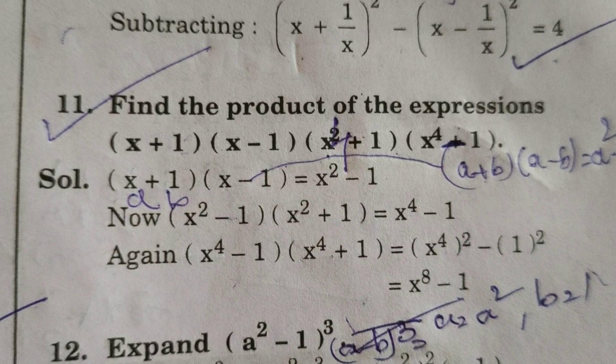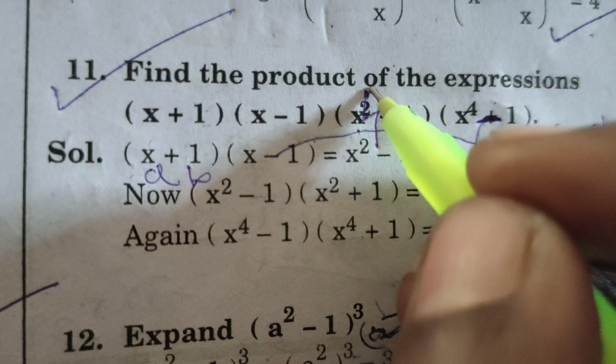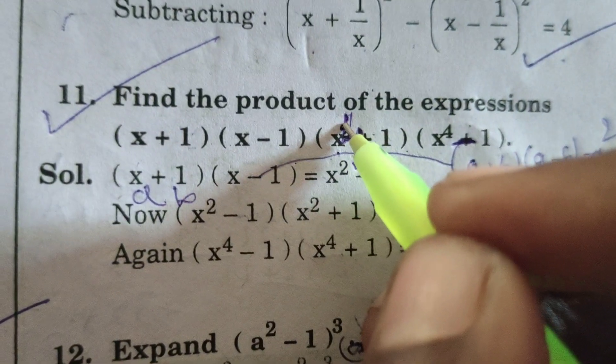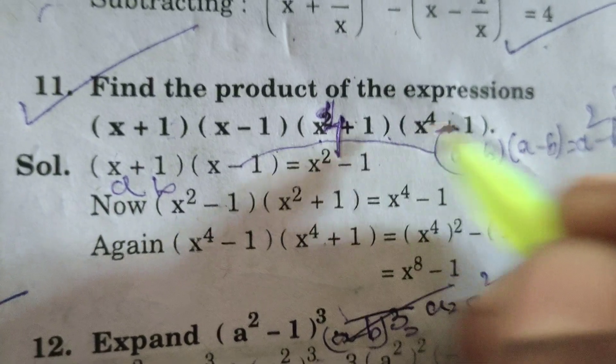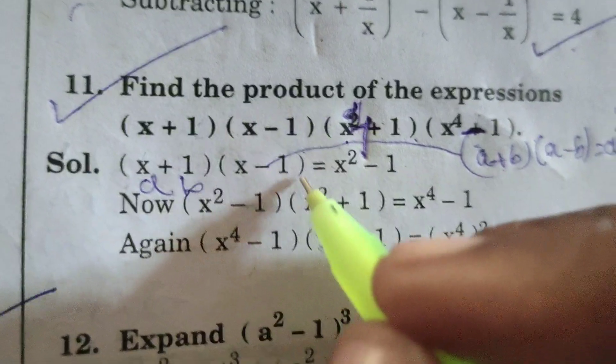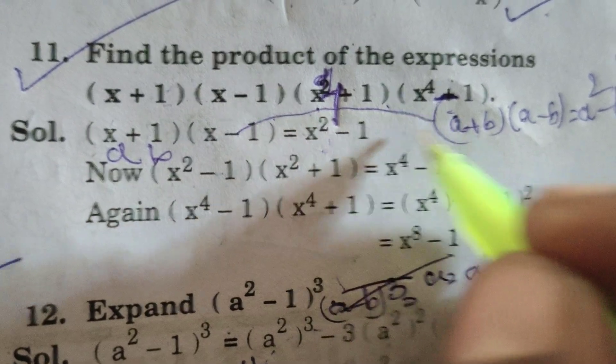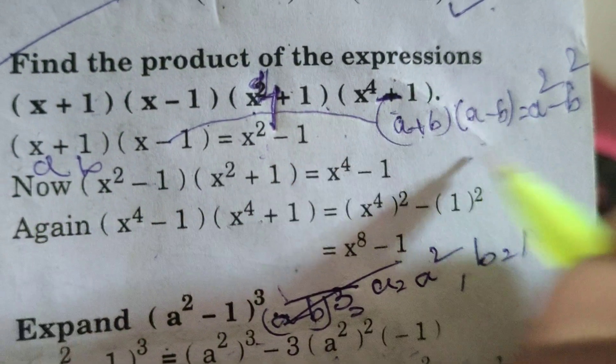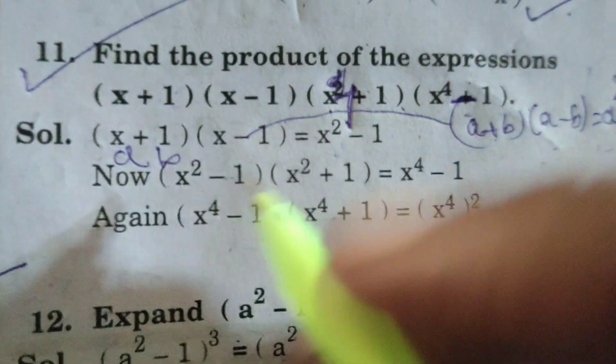This is x power 4 plus 1 into x power 4 minus 1. x plus 1 into x minus 1 equals x square minus 1. Using this formula, a plus b into a minus b equals a square minus b square. Here a means x, b means 1.